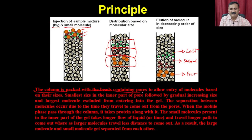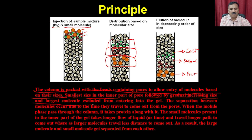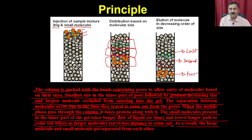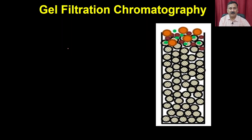The column is packed with beads containing pores to allow entry of molecules based on their sizes. The smallest molecules enter the innermost part of the pore, followed by gradually increasing sizes, while large molecules are excluded from entering the gel. Separation occurs due to the time molecules take to travel out from the pores. When the mobile phase passes through the column, it takes proteins along with it. Small molecules present inside the gel travel a longer path to come out, whereas larger molecules travel a shorter distance.